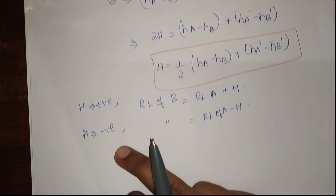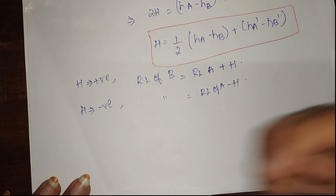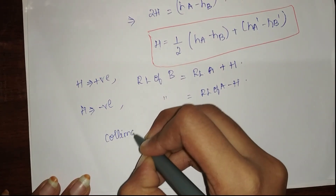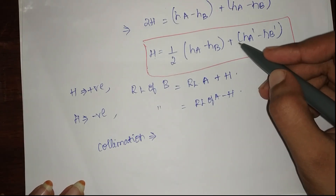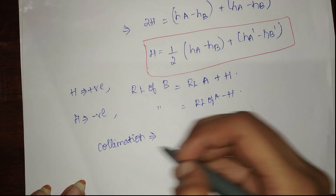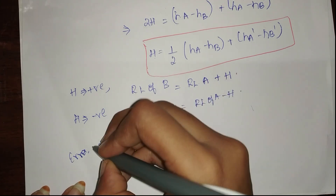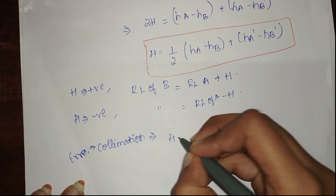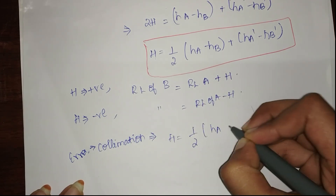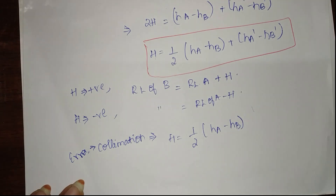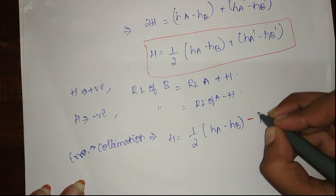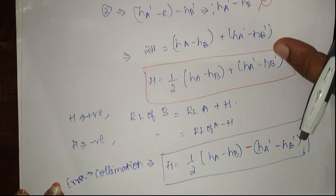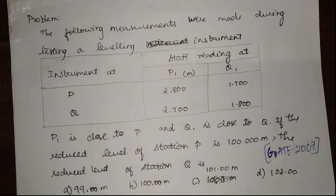If they ask for the error due to collimation, simply modifying this formula will give you the answer. It is h = (1/2) × (hA minus hB) minus (hA' minus hB'). Note the minus sign between the two bracketed terms instead of a plus.